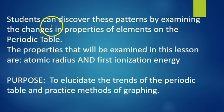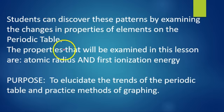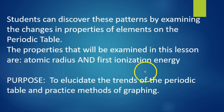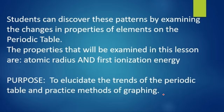We're going to discover the patterns by examining the changes in properties of elements on the periodic table. The properties that will be examined in this lesson are atomic radius and the first ionization energy. To look at the trends, we are going to graph them and see what they look like in graphic form.